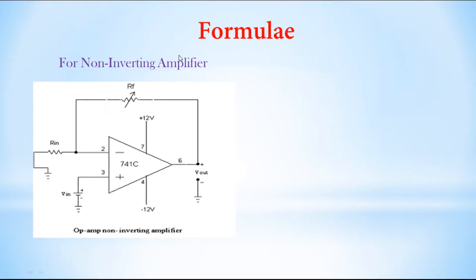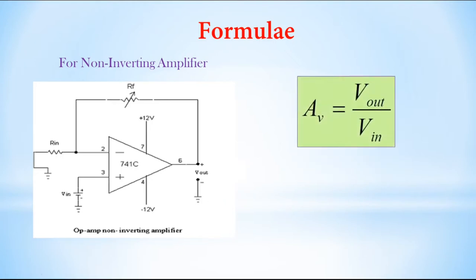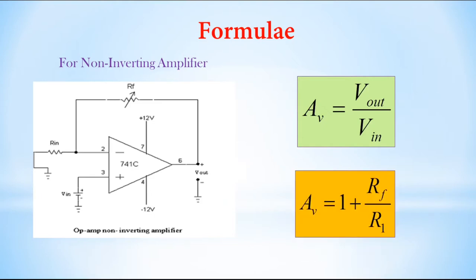Next, for the non-inverting amplifier, we apply input at terminal 3, which is the non-inverting terminal. Terminal 2 is the inverting terminal. The 741C op-amp is connected to a 12-volt dual power supply. RF is the feedback resistor, R1 is the input resistor, Vin is the input, and output is measured at terminal 6 with respect to ground. The voltage gain for the non-inverting amplifier is AV equal to 1 plus RF divided by R1.